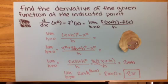Then you factor x plus h squared, which gives you x squared plus 2xh plus h squared minus x squared over h.